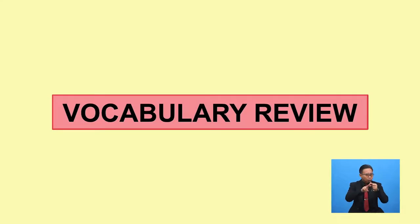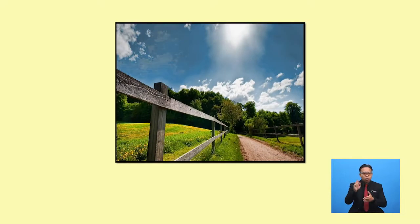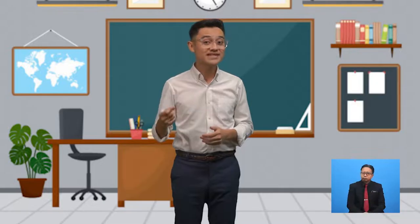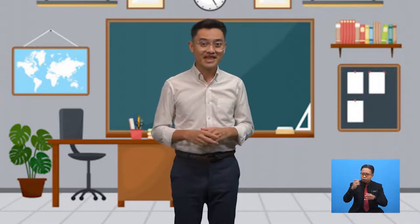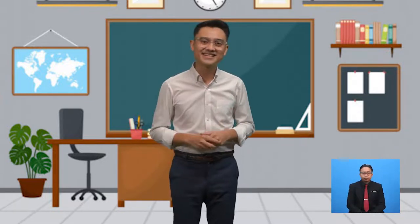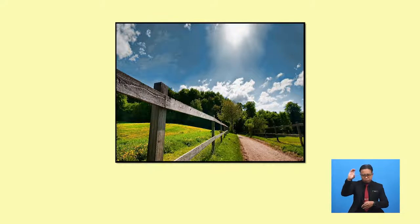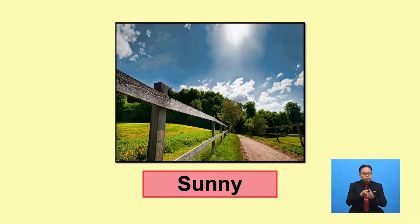Vocabulary Review. What's the weather like today? What do you see through the window? That's right! It's the sun! When we can see the sun, we say: 'It's sunny.' 'The sun is shining.' 'It's bright.'